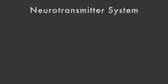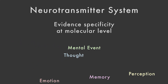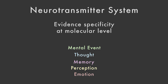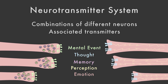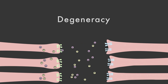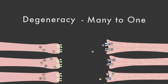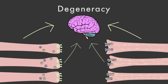Though the neurotransmitter system has provided some evidence of specificity at the molecular level, it's important to remember that a mental event — thought, perception, memory, or emotion — is not created by only one set of neurons or one type of neurotransmitter. Instead, combinations of different neurons and associated neurotransmitters can create similar instances of these experiences. Neuroscientists call this principle degeneracy, which means many to one: many combinations of neurons can produce the same outcome.